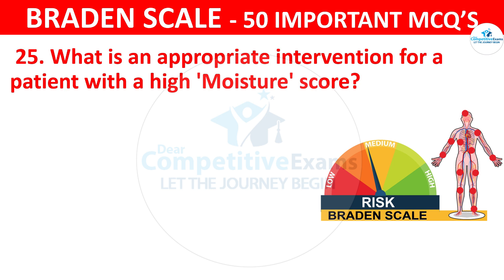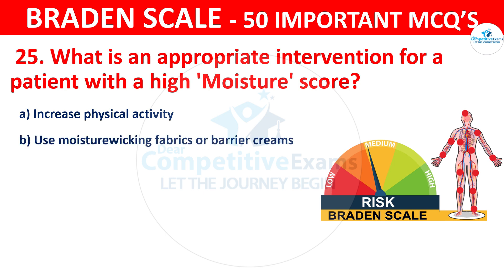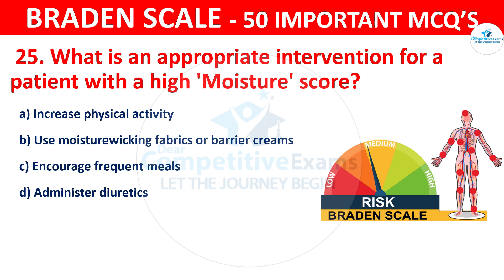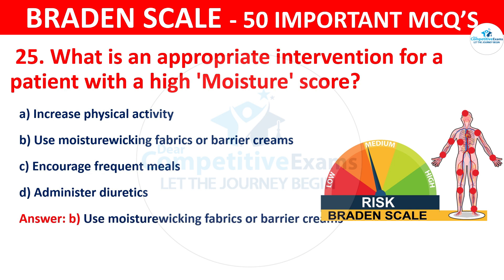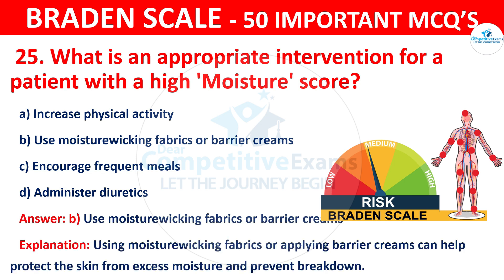Question number twenty-five: What is an appropriate intervention for a patient with a high moisture score? The options are increase physical activity, use moisture-wicking fabrics or barrier creams, encourage frequent meals, or administer diuretics. The correct answer is B — use moisture-wicking fabrics or barrier creams. These help protect the skin from excess moisture and prevent breakdown.